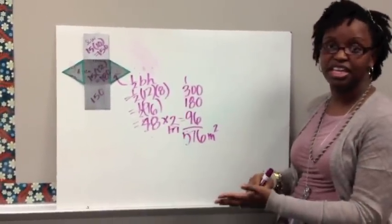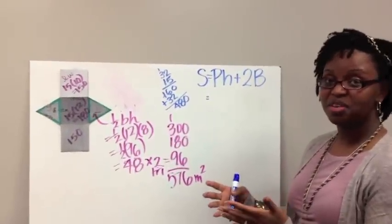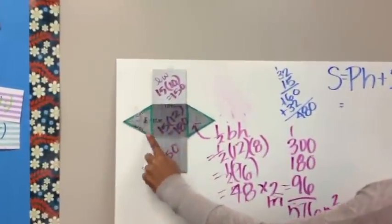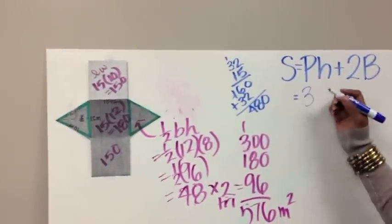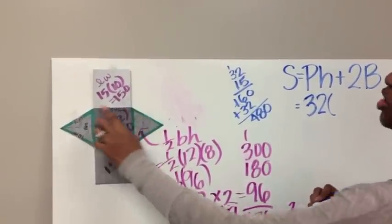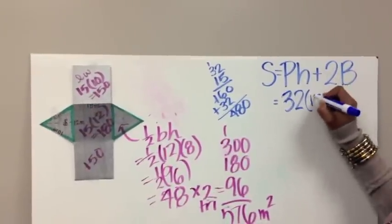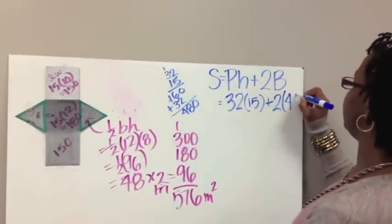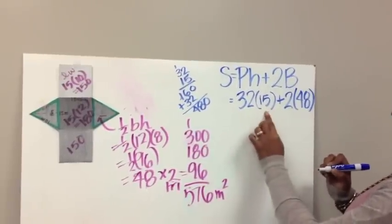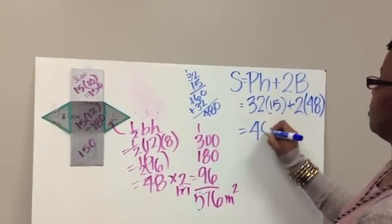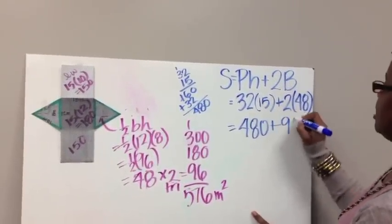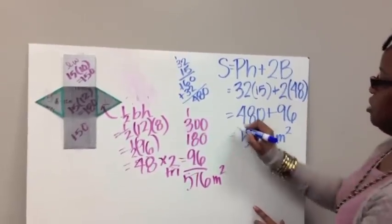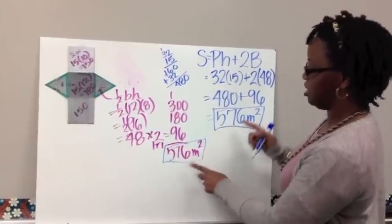Now let's look at how we can use the formula and get that same answer. We plug in the information into the formula for surface area of a prism. First, perimeter of the base — our bases are the triangles — so 12 plus 10 plus 10 gives a perimeter of 32. The height is the distance between your bases, so our height is 15. Plus 2 times the area of the base, which was 48. So 32 times 15 is 480, plus 2 times 48 is 96, and adding those gives a surface area of 576 meters squared. Use nets or use the formula — you still get the same surface area.